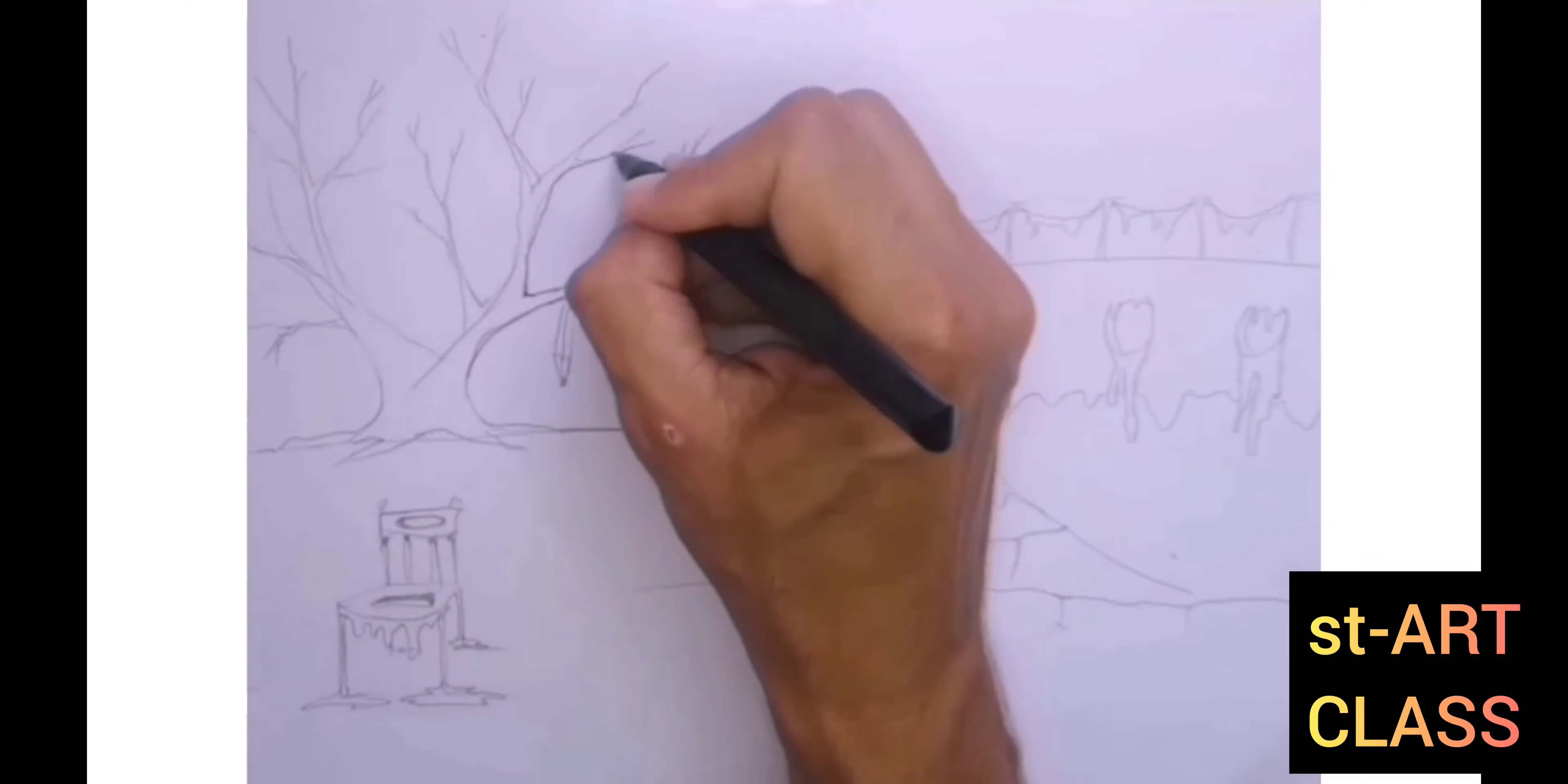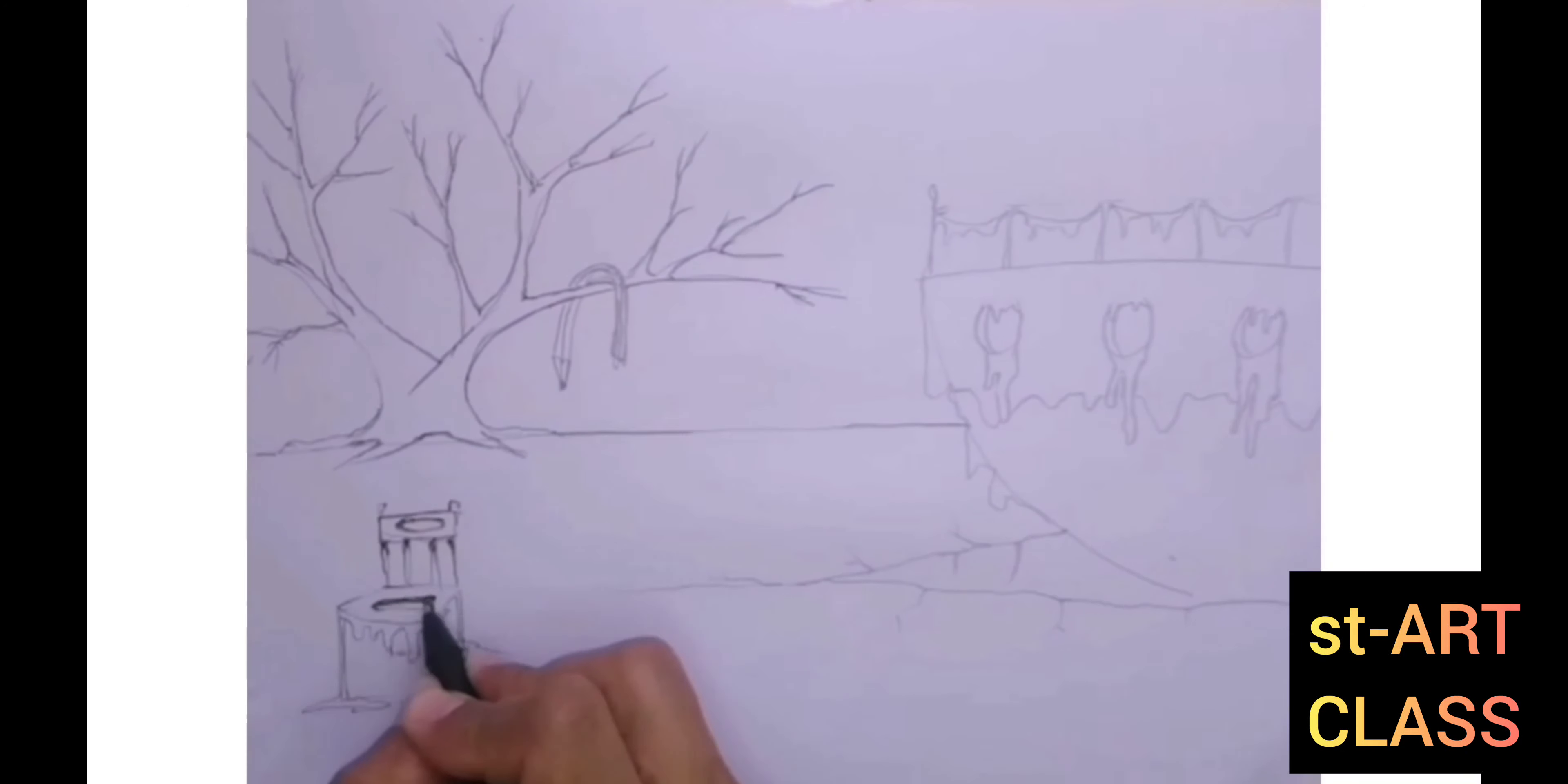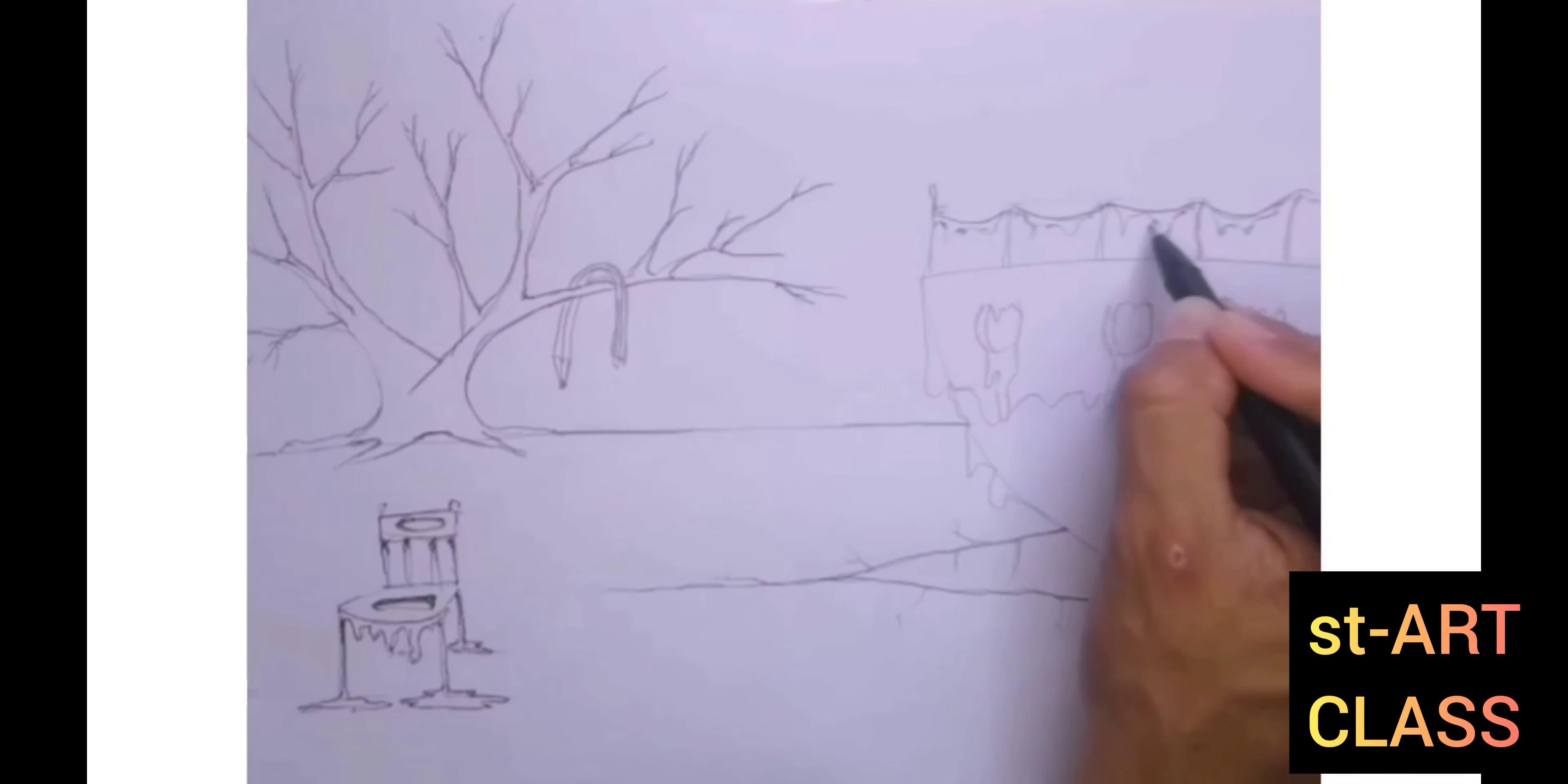You can use very thin black marker to emphasize some darker areas but do not outline your artwork.